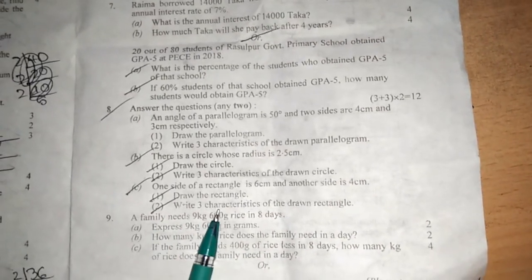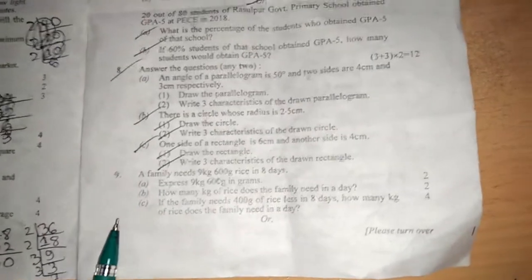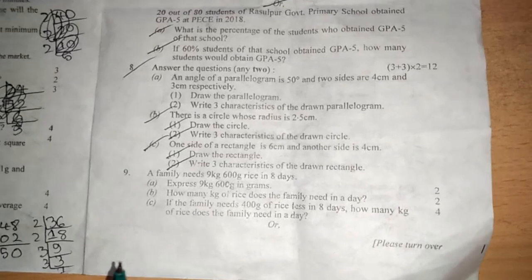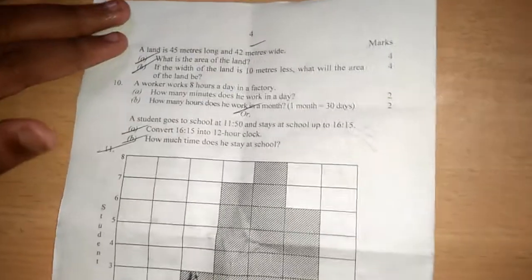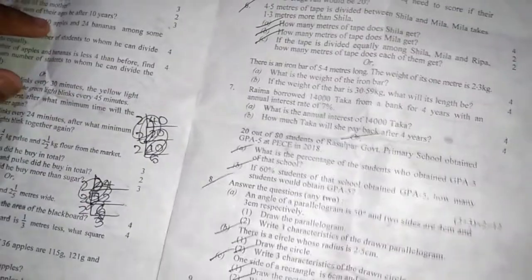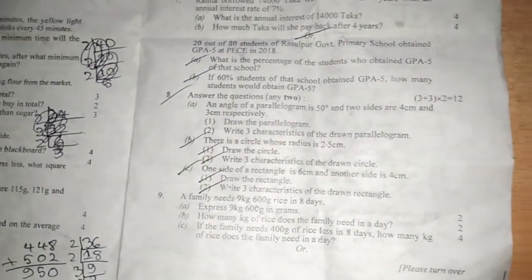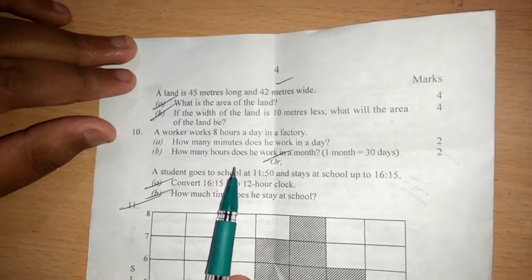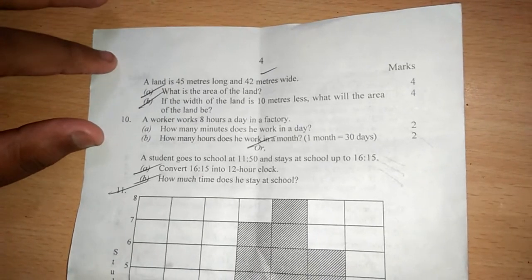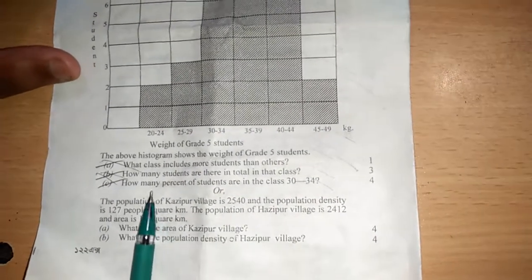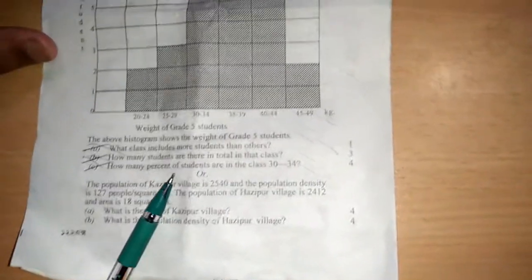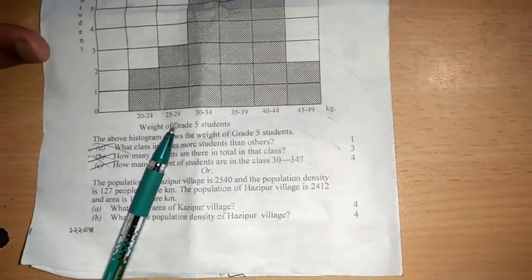Now number nine, in number nine there are two creatives. There is one and here is another one. This creative comes from the measurement chapter. Now I am showing you number ten. In number ten is time. There are two creatives and we have to give any one. Now number eleven is the last and there are two creatives. We have to give any one and this creative has come from the data arrangement chapter.